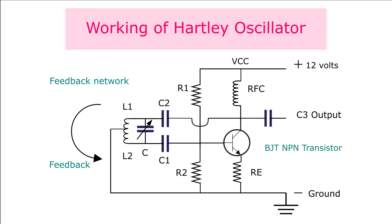Working of Hartley oscillator. When a voltage VCC is applied, it crosses the radio frequency choke or RFC and increases the collector current. The RFC at the collector provides high reactance to higher frequencies and behaves as an open circuit. At DC voltages, it produces a low reactance condition and acts as a short circuit, thus allowing the DC to pass through.